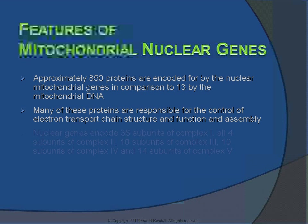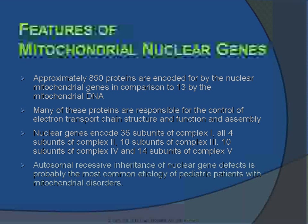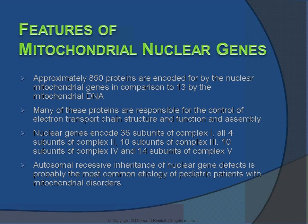What are some of the specific features of mitochondrial nuclear genes? The nuclear genes code for approximately 850 proteins, in comparison to 13 by the mitochondrial DNA. Many of these proteins are responsible for the control of the electron transport chain structure, function, and assembly. As an example, nuclear genes encode for 36 of the approximate 45 to 46 subunits of complex 1, all 4 of complex 2, 10 of complex 3, and so on.